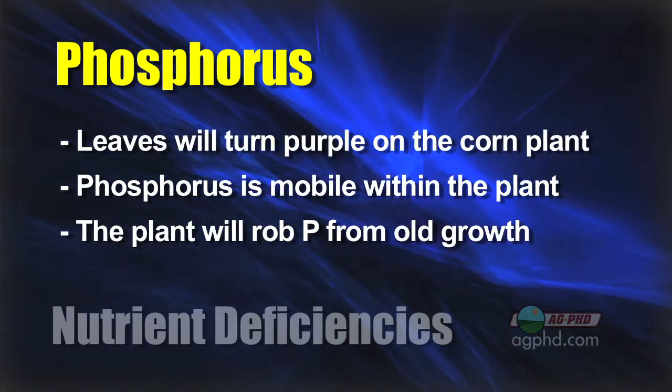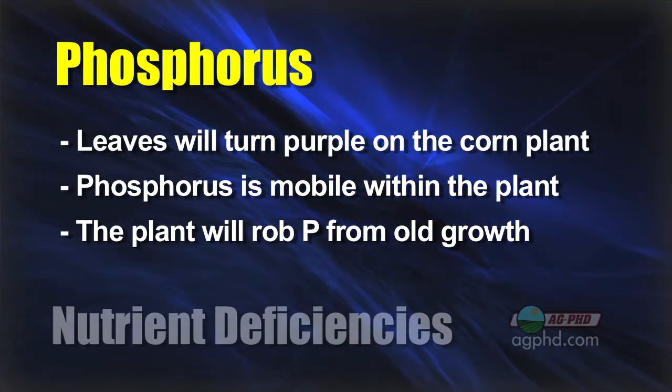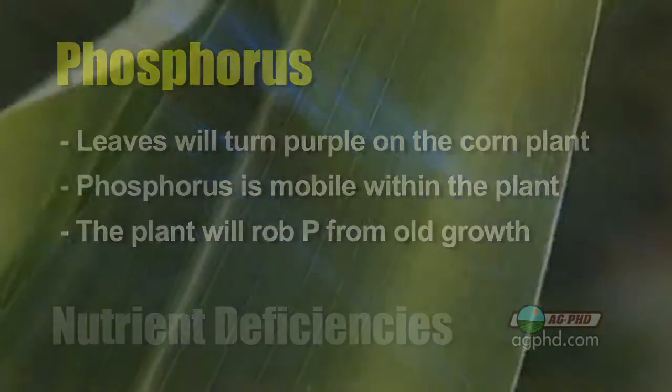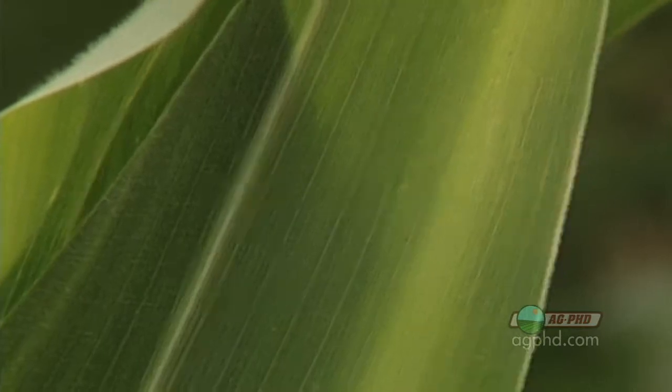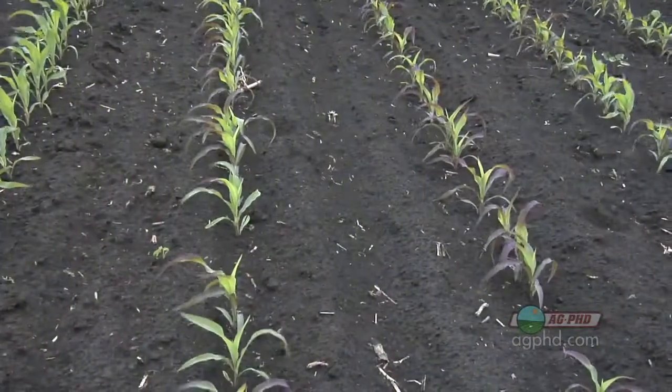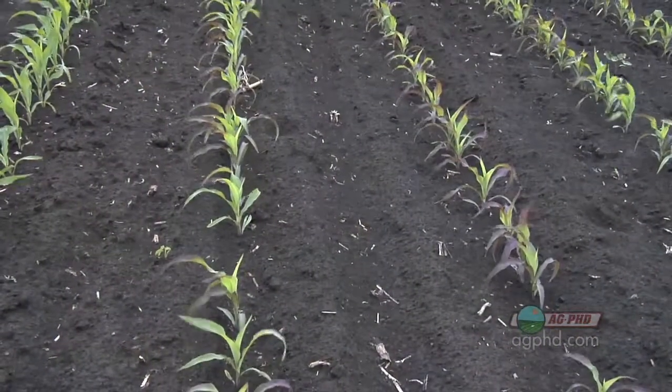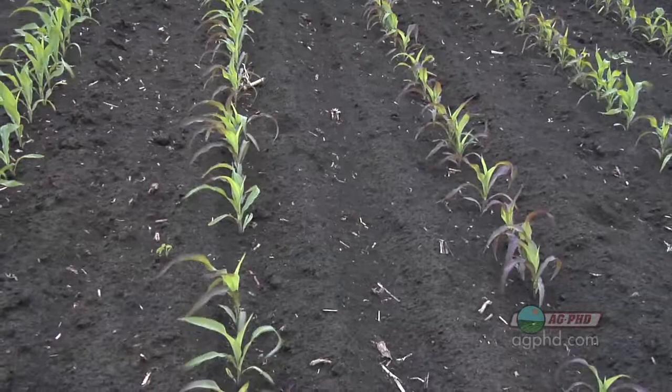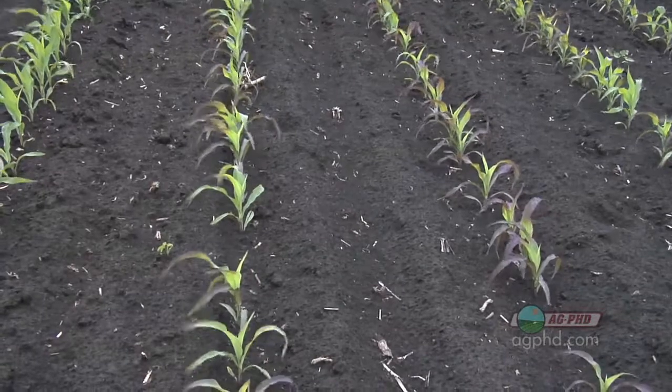The same thing can happen with nitrogen and potassium as well. Your N, P, and K are mobile nutrients in the plant, so when you see nutrient deficiencies they will always be in the lowest leaves first.